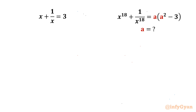Welcome back to Infigr, my dear friends. In today's video we have another very interesting question from algebra. Here we have to find out the unknown a, given the equations x plus 1 over x equal to 3, and x power 18 plus 1 over x power 18 equal to a times a squared minus 3. So let us get started.